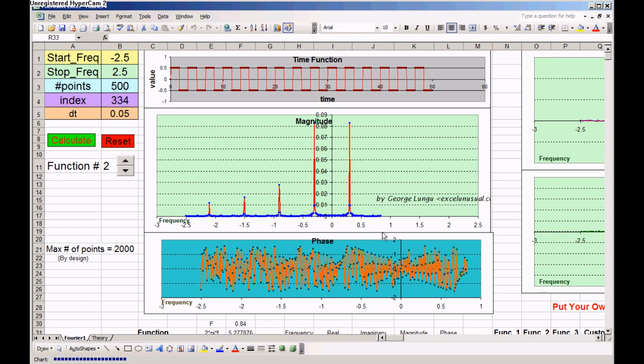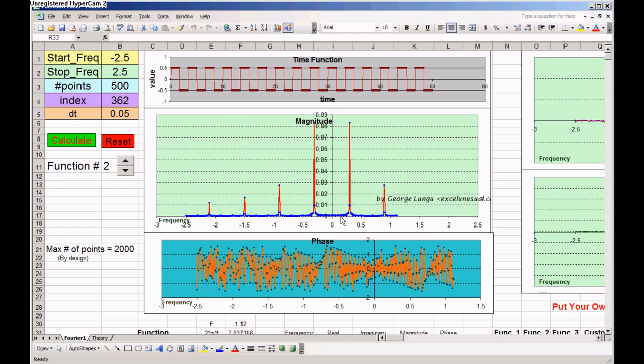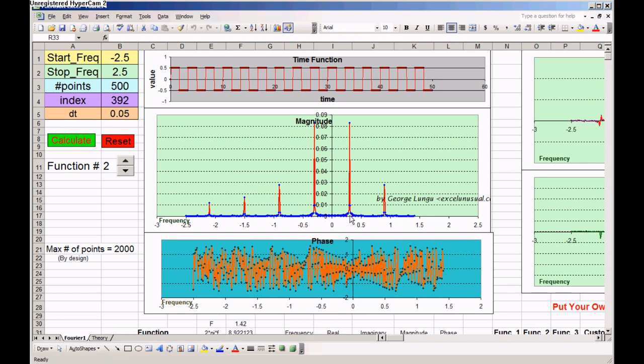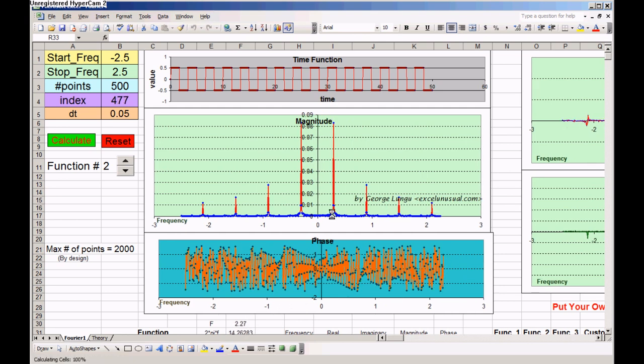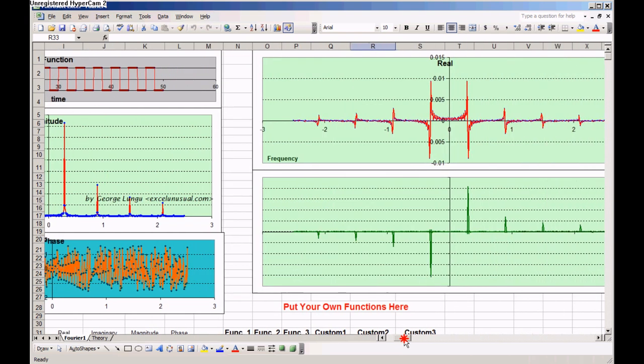We have odd harmonics. So the fundamental here is 0.3 hertz. Then we have harmonic number three. So three times 0.3 is 0.9. Five times 0.3 is equal to 1.5. And seven times 0.3 is equal to 2.1. So we got what we expected to get.